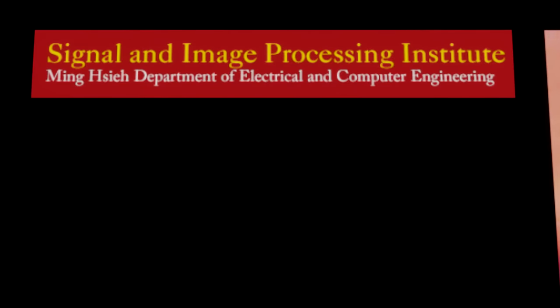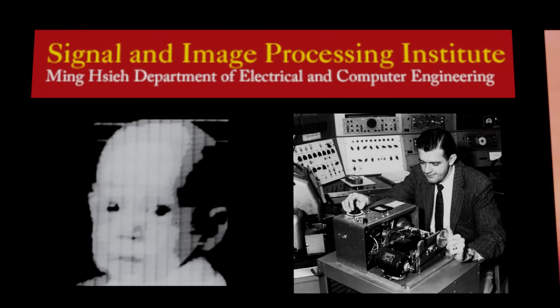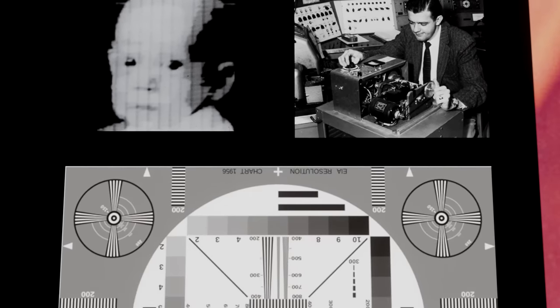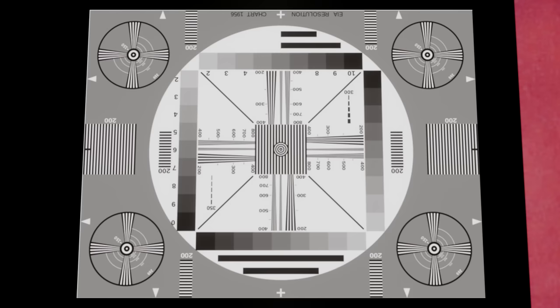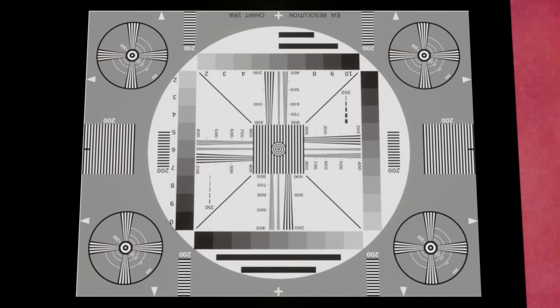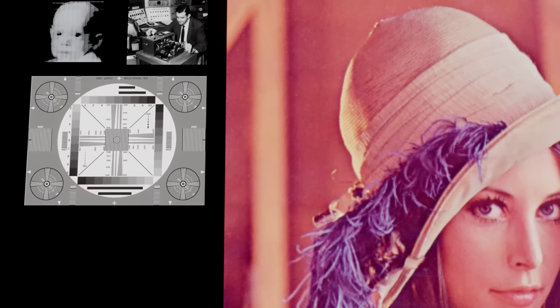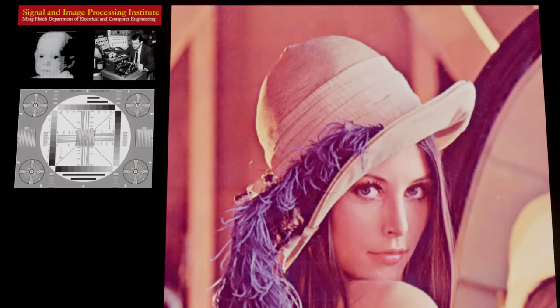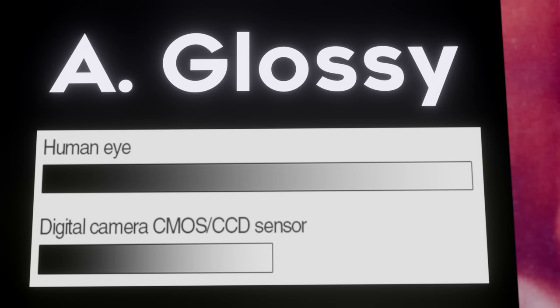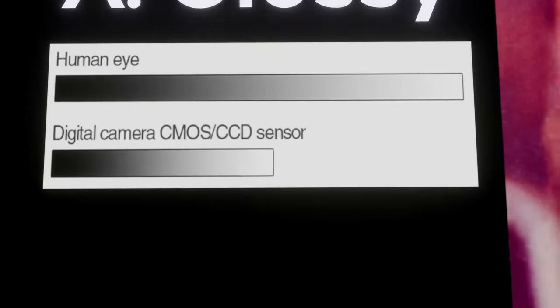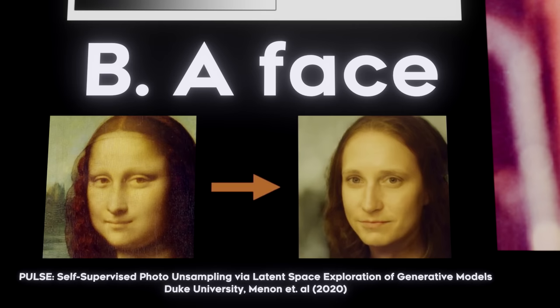We're at the University of Southern California in the Signal and Image Processing Institute. The first ever digital image was 16 years old by that point. At that time, the lab was looking to generate a new set of standardized test images to replace the boring ones from the 60s. On this particular day, they really just had two criteria: they wanted a glossy image, because glossy surfaces provide good dynamic range — the difference in brightness between the lightest and darkest spots — and they wanted a human face, because humans are really good at recognizing when something is wrong with a human face.